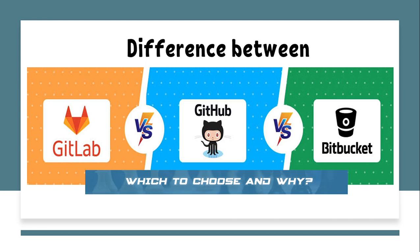Hello viewers. Today we will talk about GitLab, GitHub and Bitbucket. In industry, these are the three most popular tools. Every developer is using one of these, so let's try to clear the confusion and difference between all three, and which to choose and why.